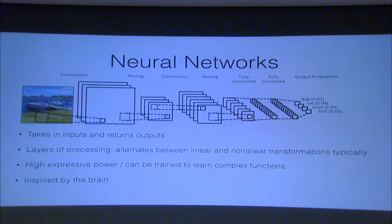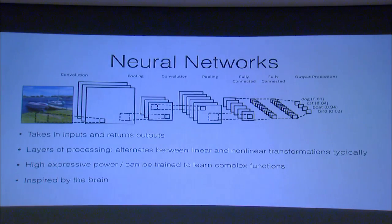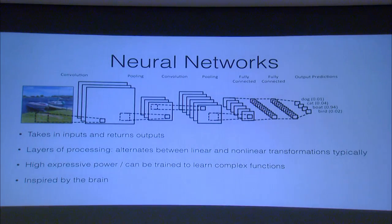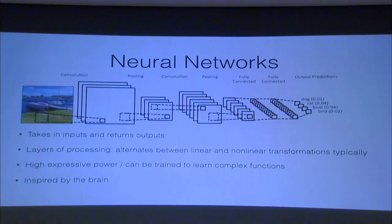Neural networks have always had a ton of hype around them, and the hype has gone up and down many times over the years. I think the recent hype is a little bit different in that it's not going to suddenly drop anytime soon. Even if it is overhyped, I don't think it's overhyped the way that the past neural network failures were overhyped.